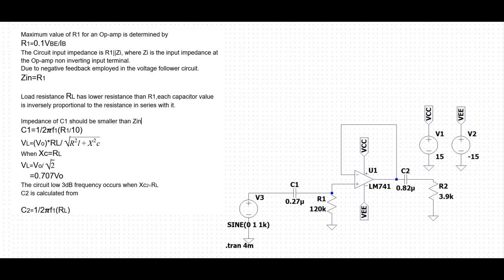Due to the negative feedback employed in the voltage follower circuit, Zn is equal to R1. Thus the load resistance RL has a lower resistance than R1. Each capacitor value is inversely proportional to the resistance in series with it, so C2 is usually larger than C1.